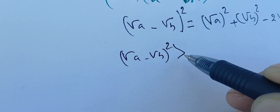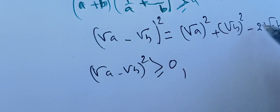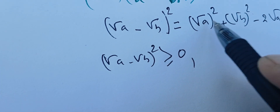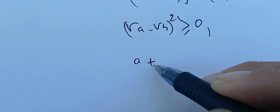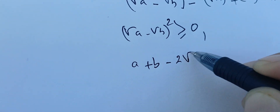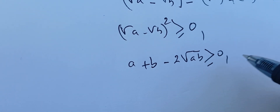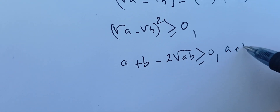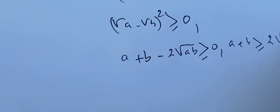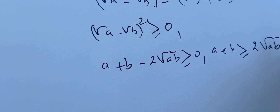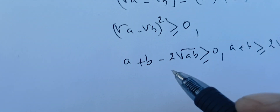This is greater than or equal to zero because we know that (√a - √b)² ≥ 0. This gives us that a plus b minus two square root of ab is greater than or equal to zero, and therefore a plus b is greater than or equal to two times the square root of ab.